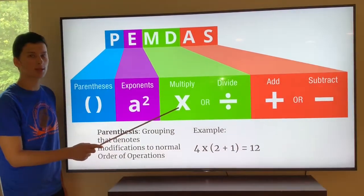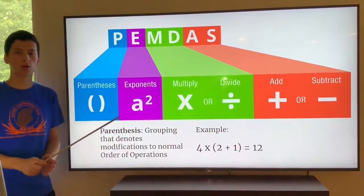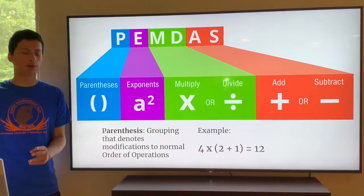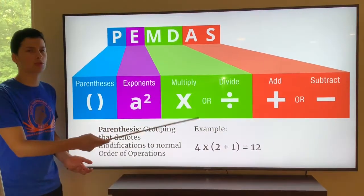So if you saw a multiplication sign and a division sign, you would just go from left to right and do whichever operation came first on the left, and then do the one on the right. You wouldn't do multiply over divide, or you wouldn't do addition over subtraction.